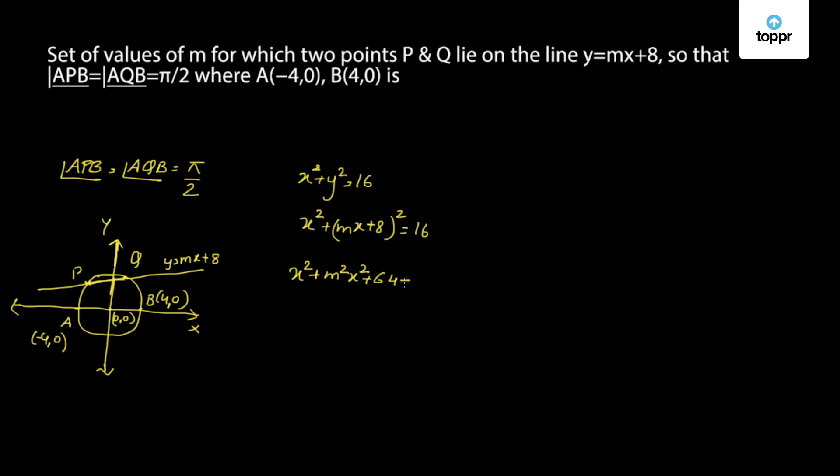Let us expand this. We get m²x² + 64 + 16mx + 48 = 0. So the discriminant of this equation is b², that is 16²m² - 4 × 48 × (1 + m²) is strictly greater than 0. We can cancel 16 with this, so we have 4m² - 3 - 3m² greater than 0.